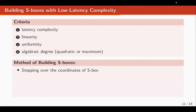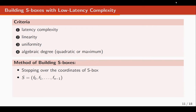Our method of building S-boxes proceeds step by step over choosing coordinates. Considering S as our S-box and Fi's as its coordinates, we first choose F0, check for criteria, then choose F1, check for criteria, and continue until the last coordinate, where we finally check the uniformity criteria to determine if the S-box is acceptable.